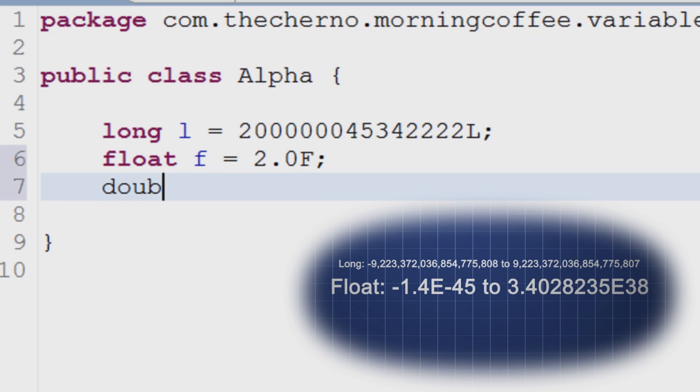Double is the last number variable on our list and it's absolutely huge. It ranges from negative 4.9E-324 to about 1.79E308—yeah, that's right, maximum value being 309 digits long.